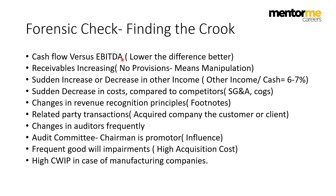The first filter is cash flow versus EBITDA — specifically operating cash flow divided by EBITDA. You're looking for a figure around 72%, though anything above 50% is appreciable. If a company has a lot of EBITDA but low operating cash flow, it means it has only booked revenue on paper, because to recognize revenue in the income statement you only need receivables or invoices — not actual cash. If those invoices are not converting to cash or are taking too long, the company will face a cash crunch.